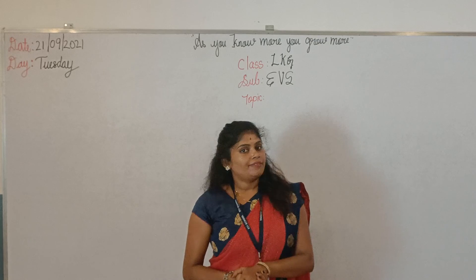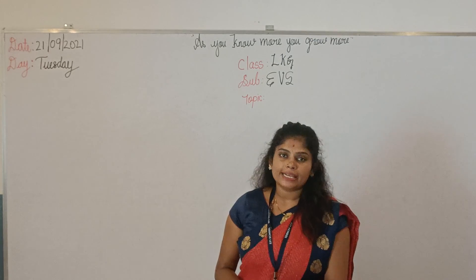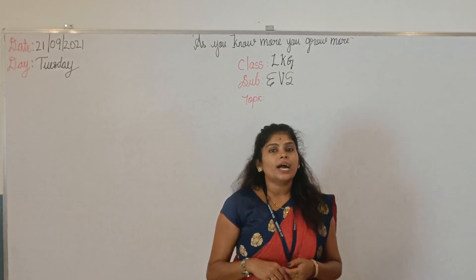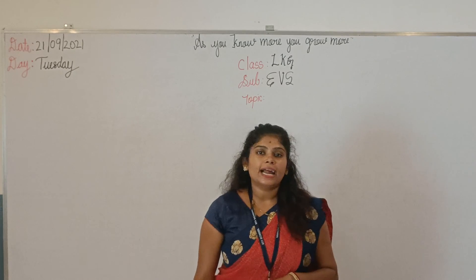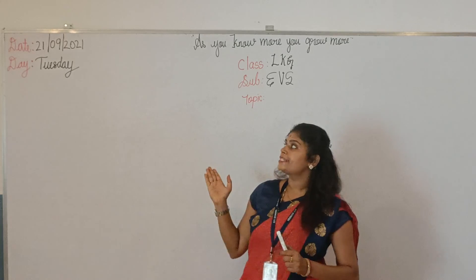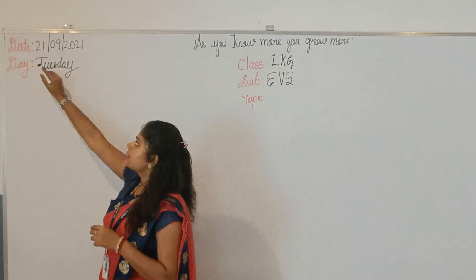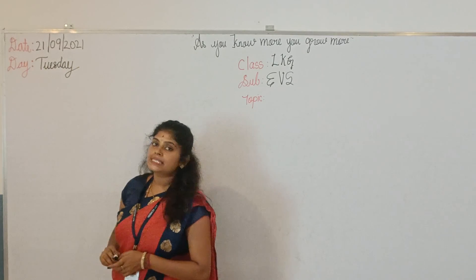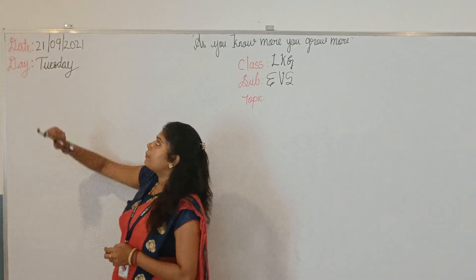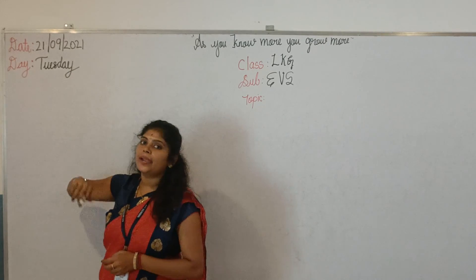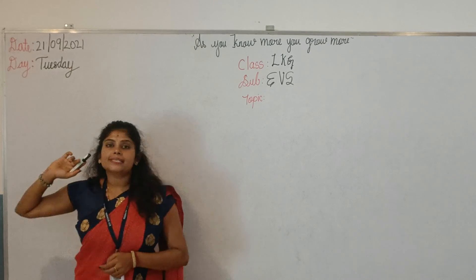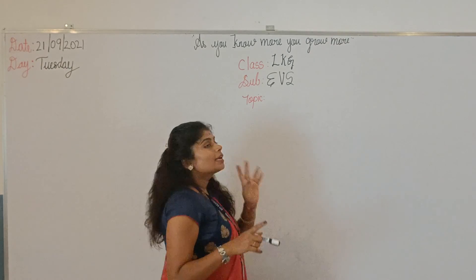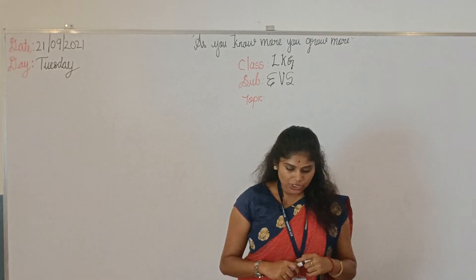Before we start the class, I need to say everyday about today's date. Please look at the board. Today's date is 2-1-21, and the month is the 9th month, September 2021. Tuesday — T-U-E-S-D-A-Y, Tuesday. On Tuesday, which is your first class? Yes, children.